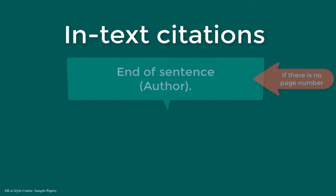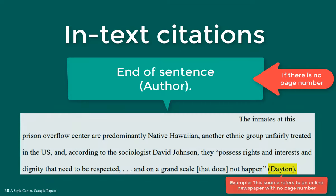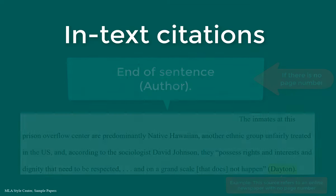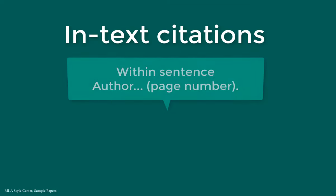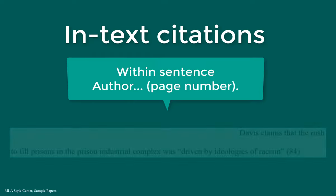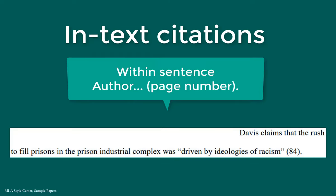If the source you are using does not have a page number, such as a website or video, then you don't need to include a page number. The second way to write your in-text citations is to include it within your sentence instead of at the end. In this case, you would write the author's name within the sentence and put the page number in parentheses at the end of the sentence before the period.